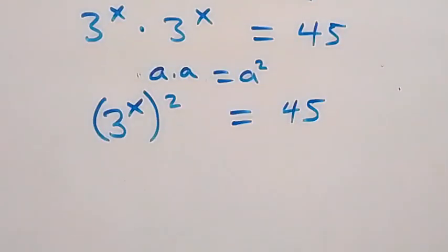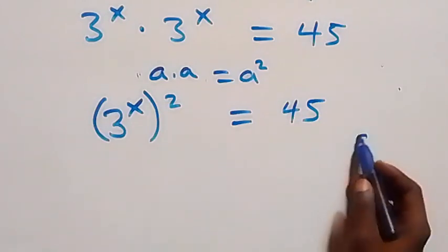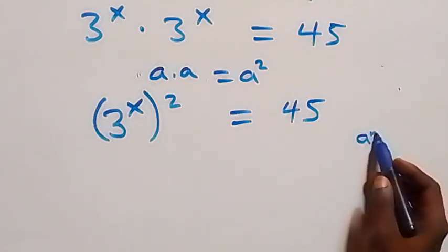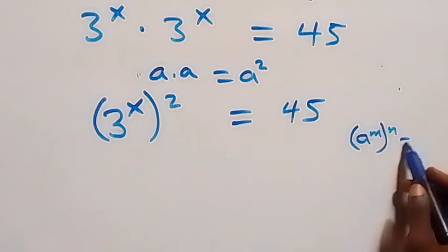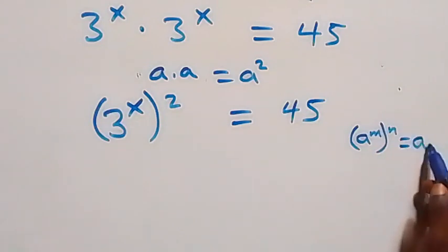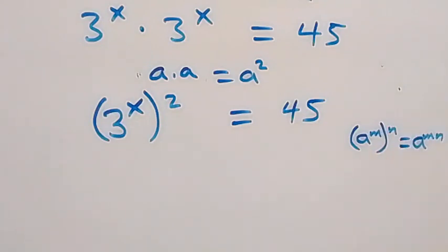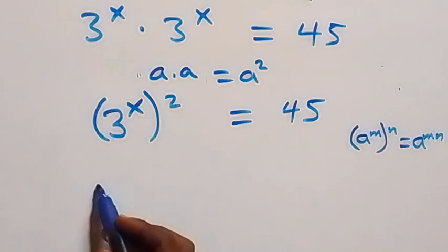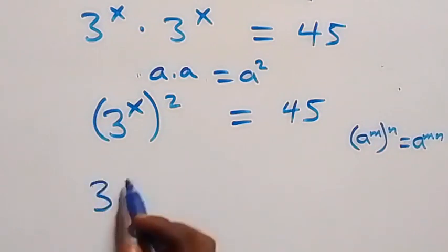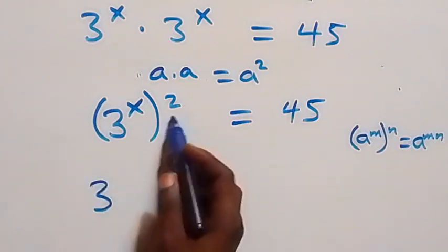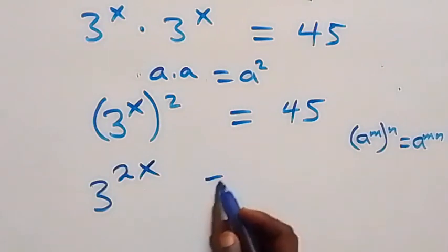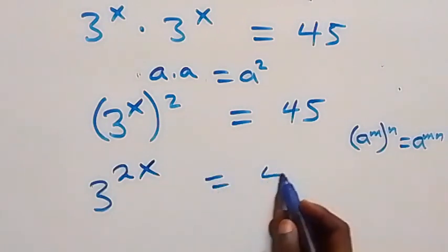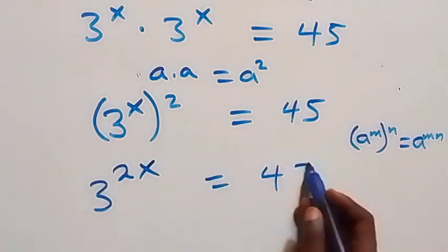From the law of indices, when we have a raised to power m raised to power n, this is simply a raised to power mn. So from here we have 3 raised to power 2 times x, which is 2x, and that equals 45.